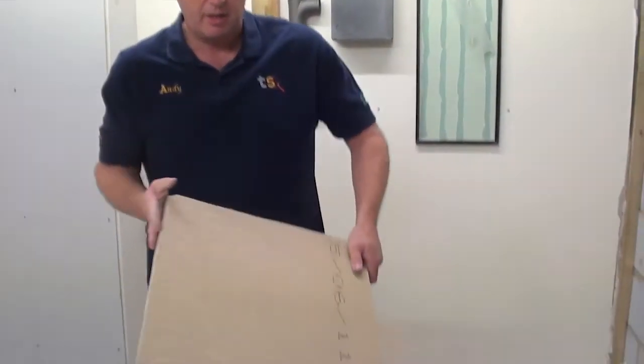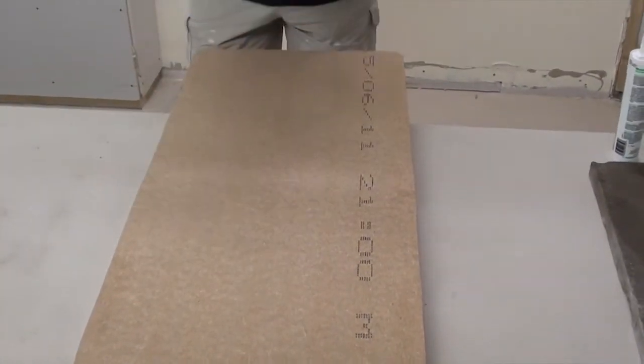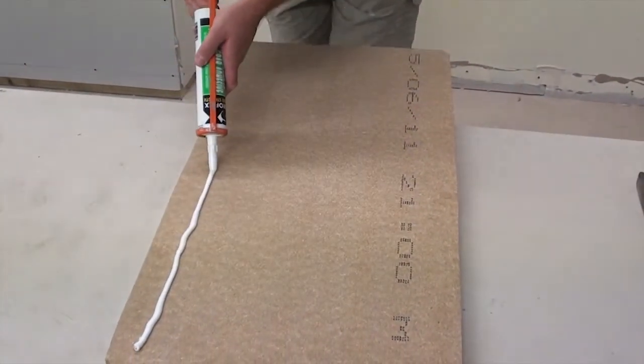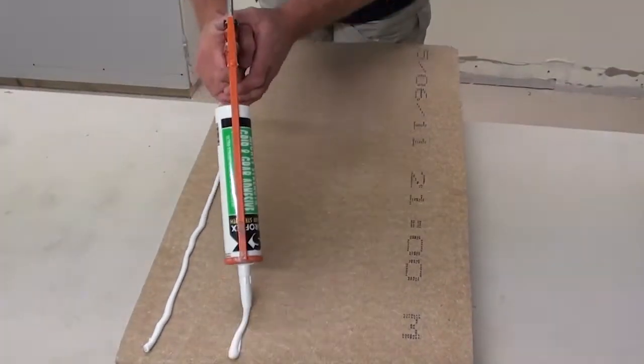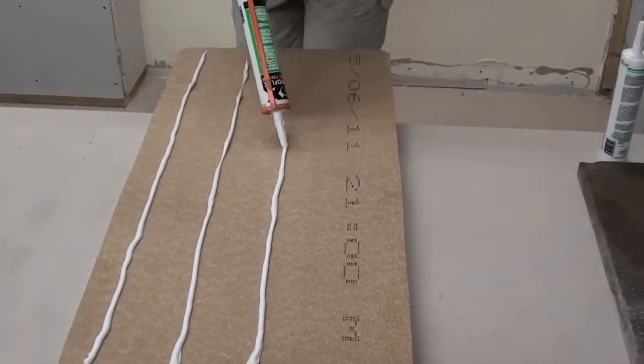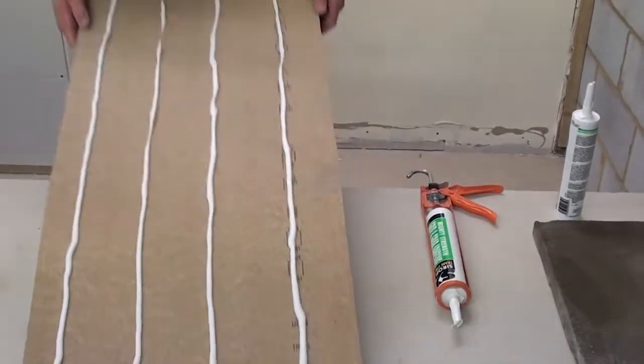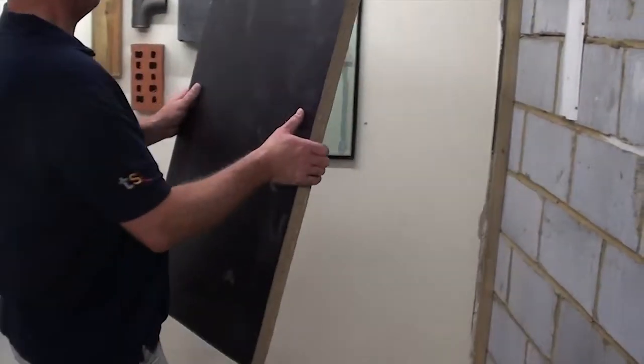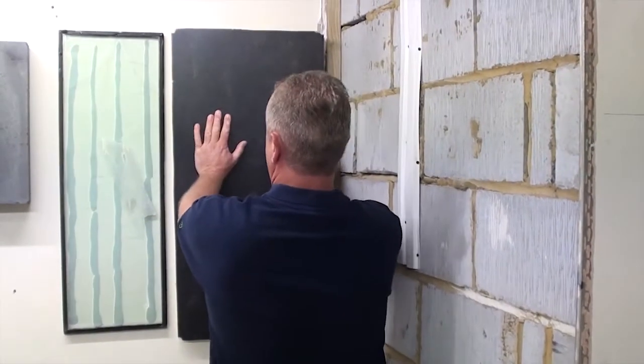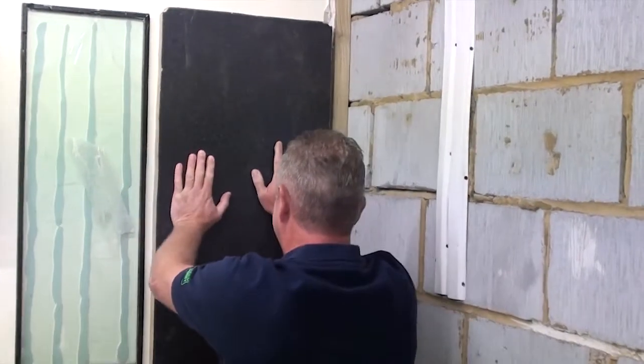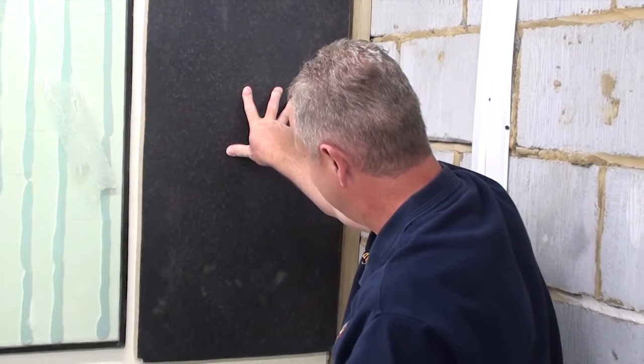Now we've got a bit of worktop that we cut down the other day, just an offcut. That's heavy as well. So we run four lines down this. That's our bit of worktop. We place this to the right hand side of our glass like so. Again, work it onto the surface. Hold it for a few seconds. And that's it.